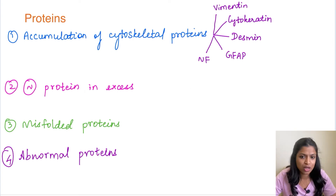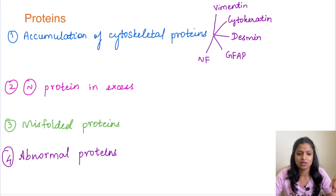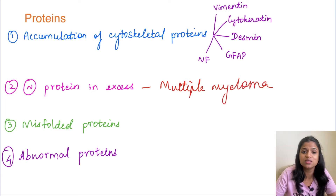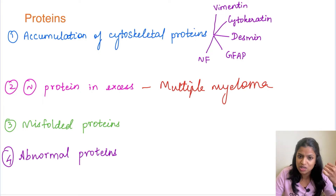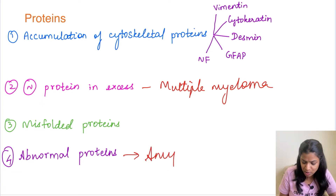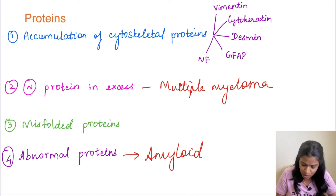We have seen about lipid accumulations. Moving on to protein accumulation — what kind of proteins accumulate, and when? Either a normal protein is produced in excess, as in multiple myeloma — where plasma cells produce abnormally increased immunoglobulins that get deposited. Alternatively, abnormal proteins accumulate, like in amyloidosis, where amyloid is a fibrillary protein. We will read about amyloidosis in detail in the immunology chapter.